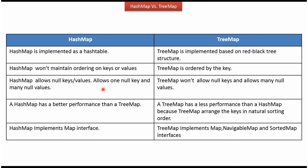HashMap allows one null key and many null values, whereas TreeMap won't allow null keys but does allow many null values. HashMap has better performance than TreeMap, because TreeMap has to arrange the keys in natural sorting order.